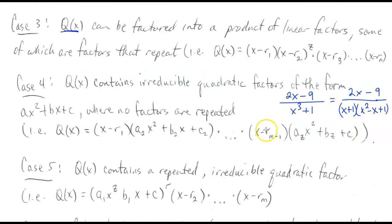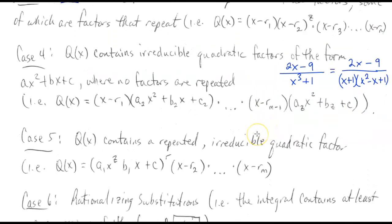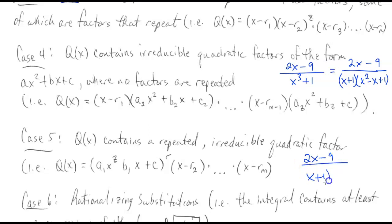Case five has a situation similar to case four, but now the irreducible quadratic factors repeat themselves. So we would have something like (2x−9) divided by (x+1)(x²−x+1)², where that quadratic factor is squared — that's what a case five looks like.